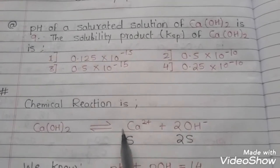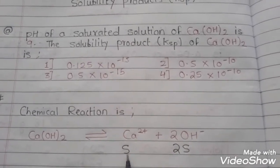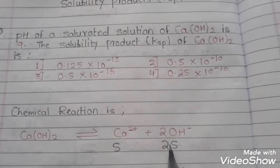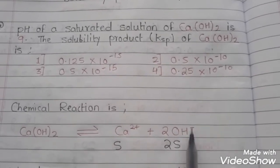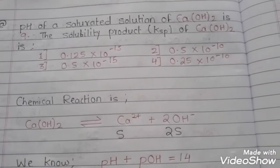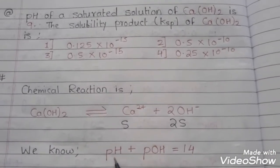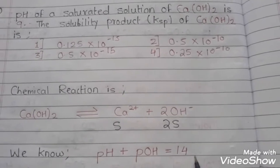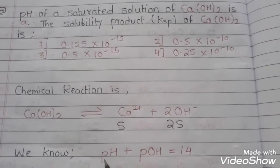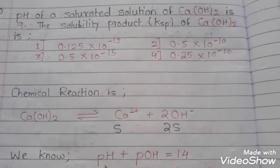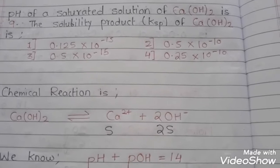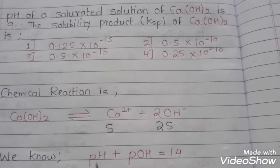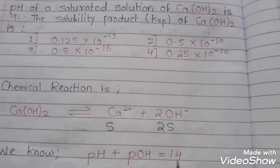Here we can see one mole of calcium cations, so the stoichiometry is 1 for calcium cations and 2 for hydroxide anions. Along with that, we also know that pH plus pOH is equal to 14. pH represents the concentration of acids and pOH represents the concentration of base. If we add the concentrations of acid and base together, we get 14.